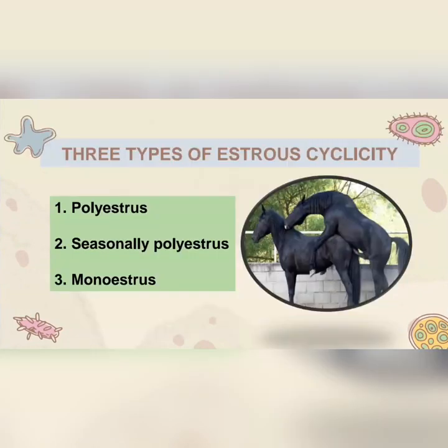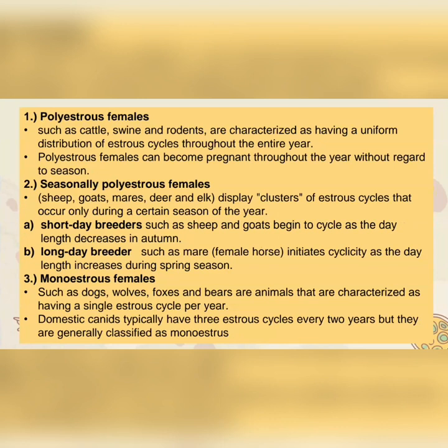We have three types of estrous cyclicity: first, polyestrous; second, seasonally polyestrous; and lastly, monoestrous. Polyestrous females, such as cattle, swine, and rodents, are characterized as having a uniform distribution of estrous cycles throughout the entire year. Polyestrous females can become pregnant throughout the year without regard to season.